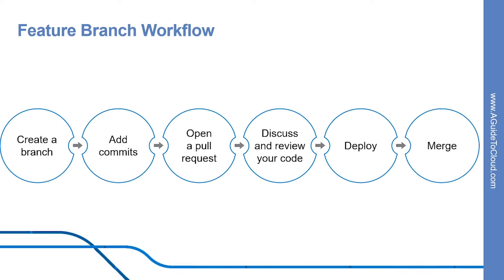Encapsulating feature development makes it possible to leverage pull requests, which are a way to initiate discussions around a branch. They give other developers the opportunity to sign off on a feature before it gets integrated into the official project. Or if you get stuck in the middle of a feature, you can open a pull request asking for suggestions from your colleagues. Pull requests make it incredibly easy for your team to comment on each other's work. In addition, feature branches can be pushed to the central repository, making it possible to share a feature with other developers without touching any official code.